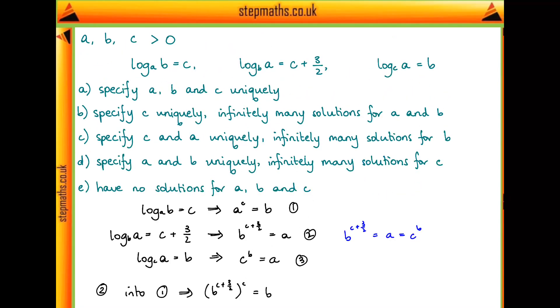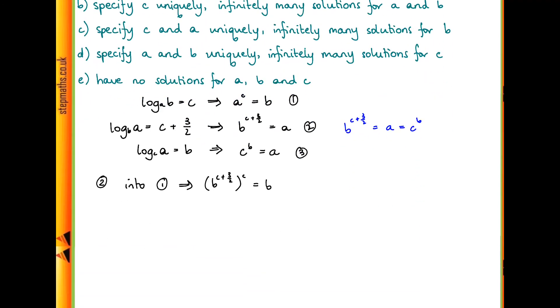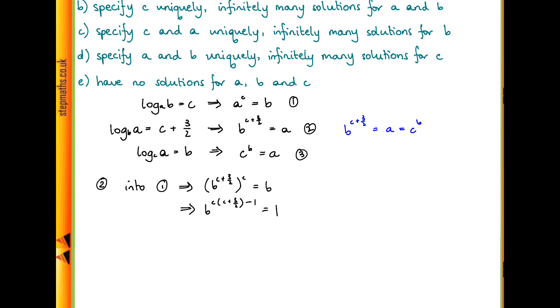Because we know that b is positive, we can cancel a b from both sides, and that will leave us with b to the power of c times c plus 3 over 2 minus 1 from cancelling a b is equal to 1. But b is a variable, it can be anything. So how do we get that equaling a constant 1? What power do we raise things to to get 1? We'd have to raise them to power 0. So that tells us that this power here must be equal to 0.